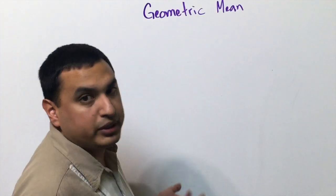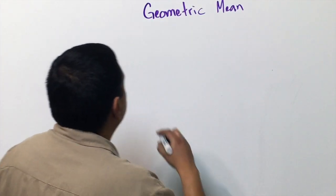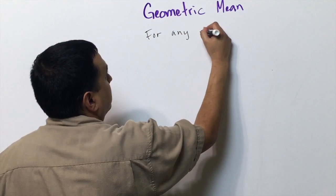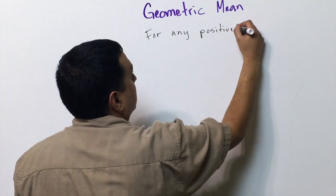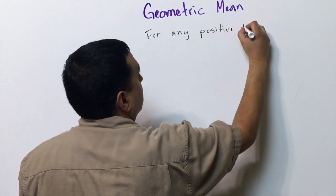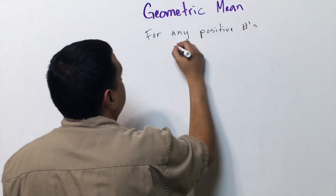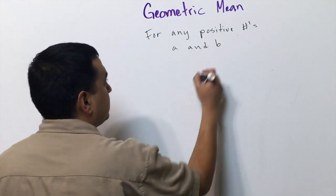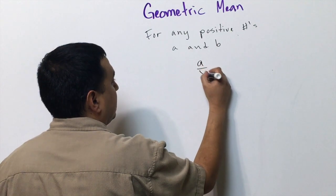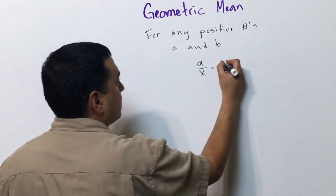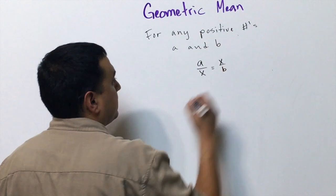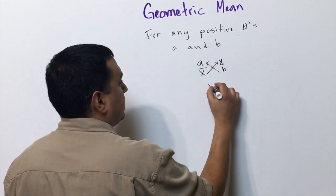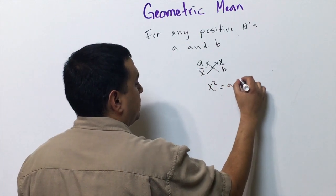Now we're going to look at what's called the geometric mean. For any positive numbers a and b, I can find a number x such that a over x equals x over b. Cross-multiplying gives x squared equals a times b.